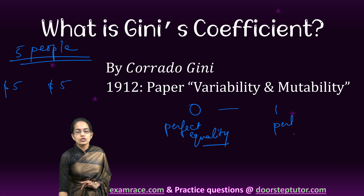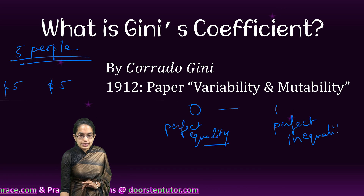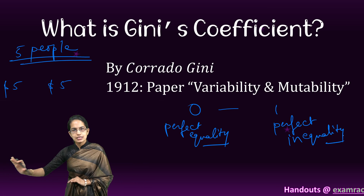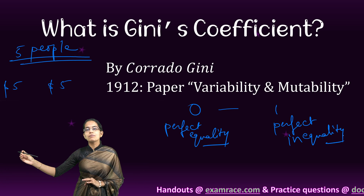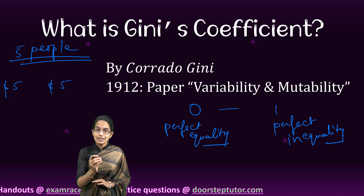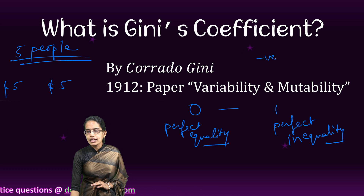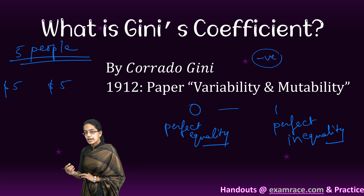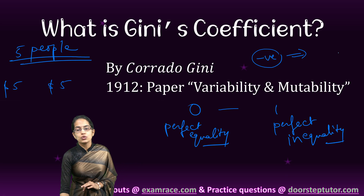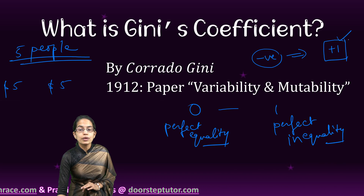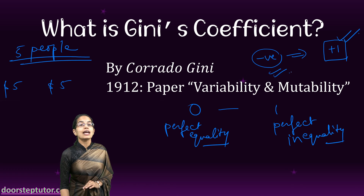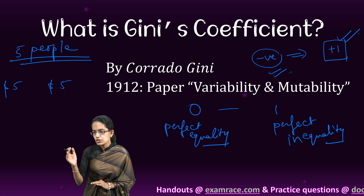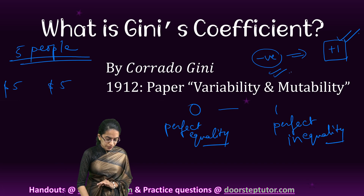That would be a case of perfect inequality. So practically the range of the Gini coefficient varies from 0, where everyone has equal amount of wealth, to 1, where wealth is concentrated in the hands of few. Theoretically, a negative income or negative wealth would associate the Gini coefficient to a value over 1, but as we said, this is just a theoretical construct and not a practical applied solution.